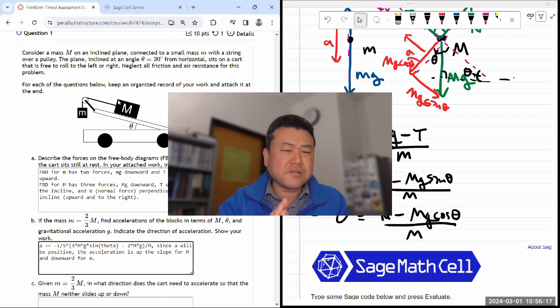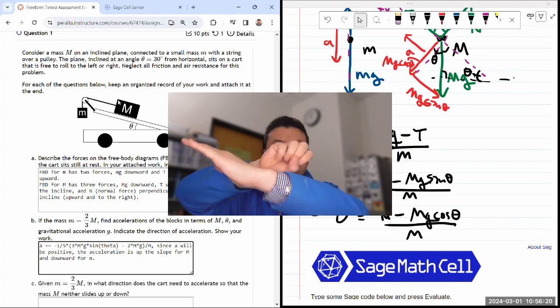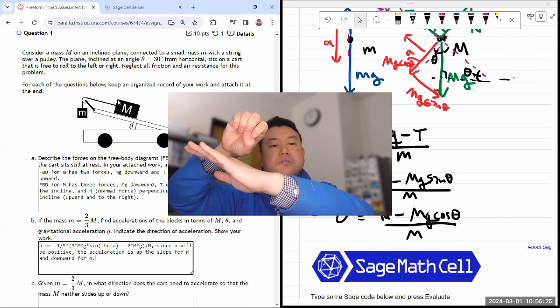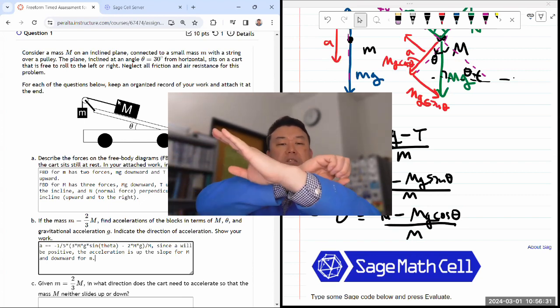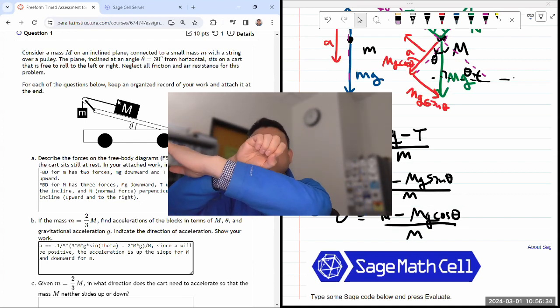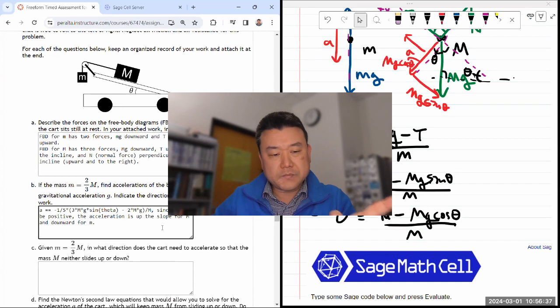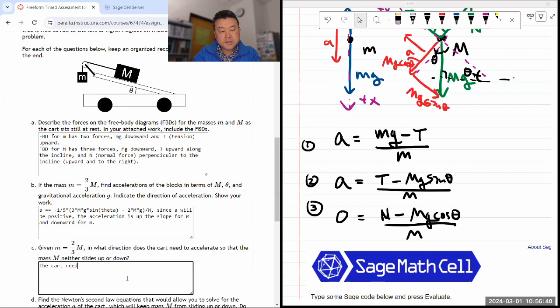And I think the answer to that really relies on your intuition. Like if you have a block that's sitting here and you don't want it to slide up. Then it feels like I need the slope to be moving to the left. So that as the block tries to slide up, it kind of catches up with it and keeps it at the same height. So I'm going to answer based on that. The cart needs to accelerate to the left to catch up with the sliding of M and keep it at the same height. That's what my intuition tells me. That's my answer.